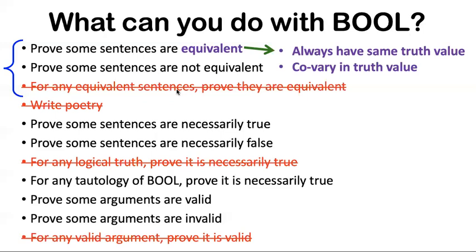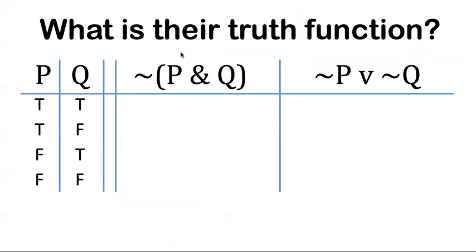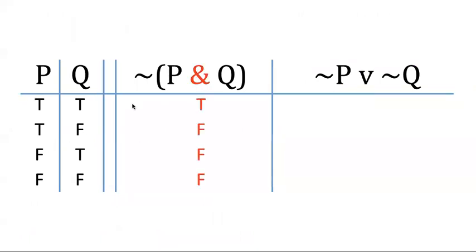All right. Let's start with showing what Bool can do. So let's prove some sentences are equivalent. Like here, I give you two sentences. When we do two sentences on the same truth table, we just call this a joint truth table. What I want you to do is compute the truth functions. So computing truth functions is a skill you need to master. And that's then how you do something with Bool, how you prove that sentences are equivalent or not. So how do we do this? First, you just compute from the inside out.